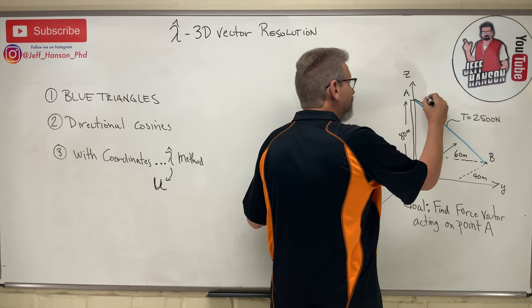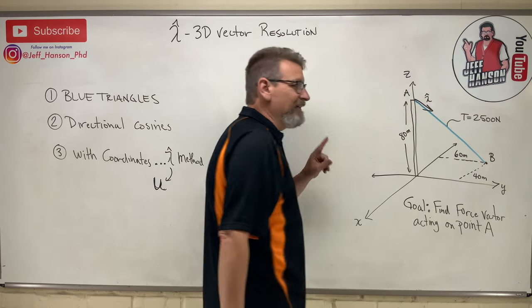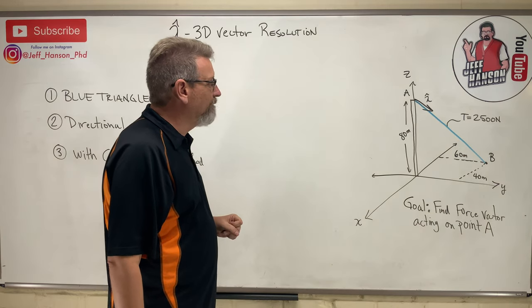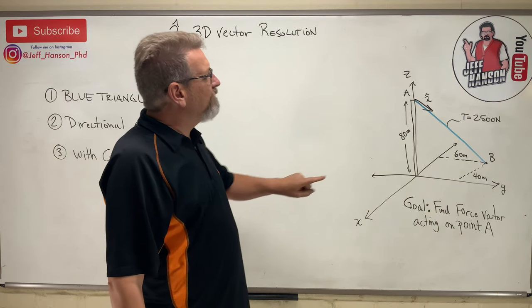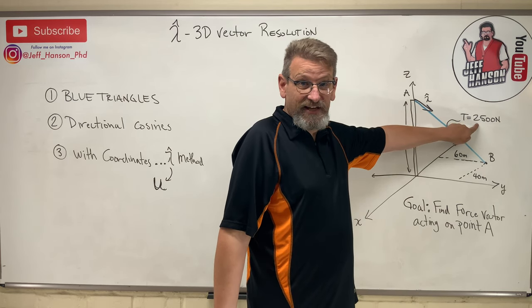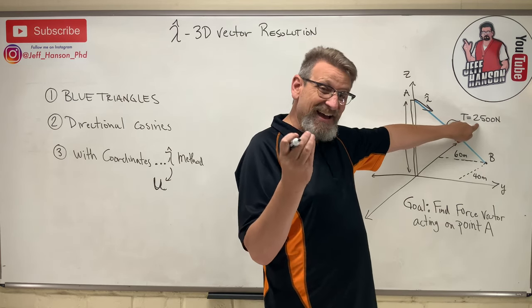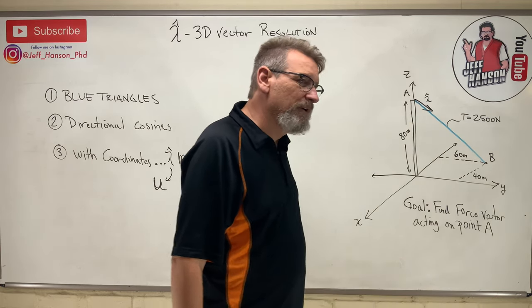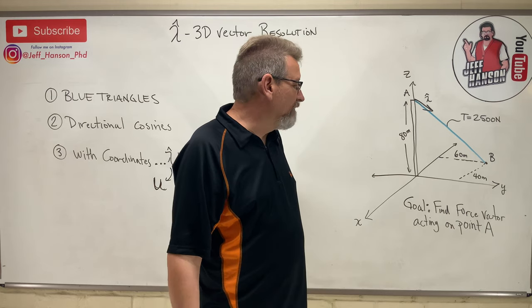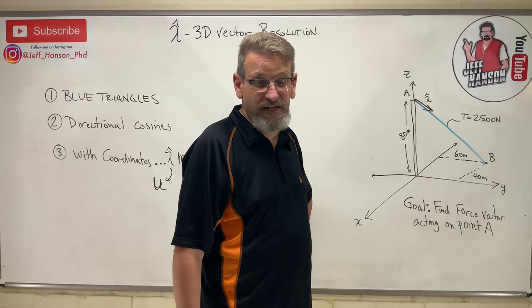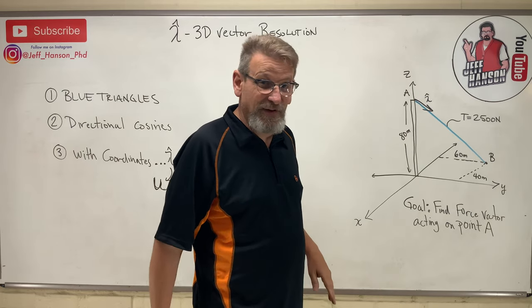So here's what we're looking for is this little force vector that's acting on the top of the pole up here. And guess what? There's our little lambda hat. He's in the direction of the vector, the force vector that we're looking for. So they give us that the tension in this cable is 2,500 newtons. So knowing that the tension, which is the magnitude of the tension, but of that 2,500, how much of it's in the X? How much of it's in the Y? And how much of it's in the Z? Well, that's what we're fixing to find out.